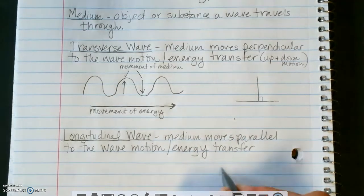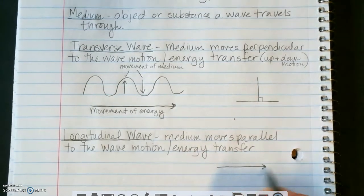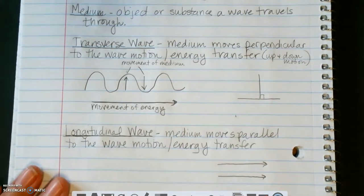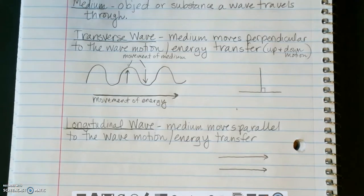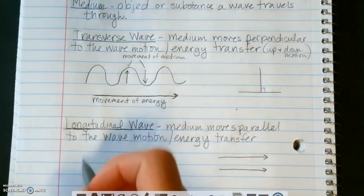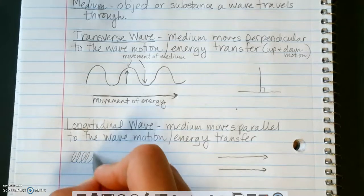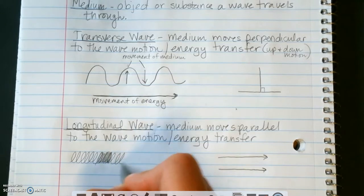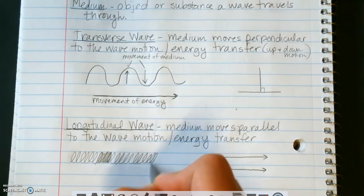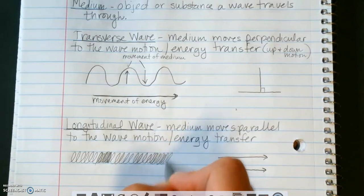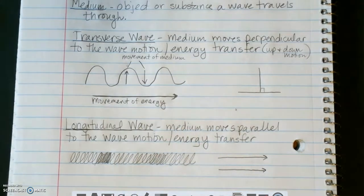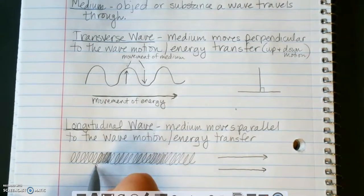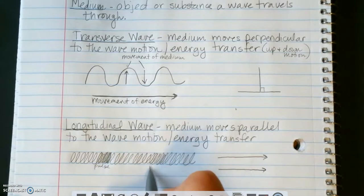So parallel, remember, means where they're going the same direction and they're the same space apart the entire time. So I'm going to just do my best to give you a slinky example. So if you have a slinky and you send a wave through it, you're going to get a wave pulse where it appears like the slinky gets closer together as the pulse travels. So the little coils get closer together. So these two things here would be wave pulses. So there's a pulse. Pulse.